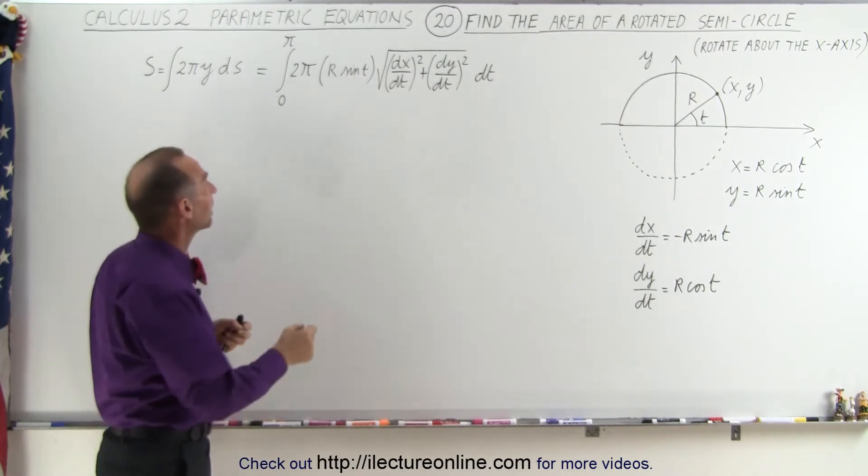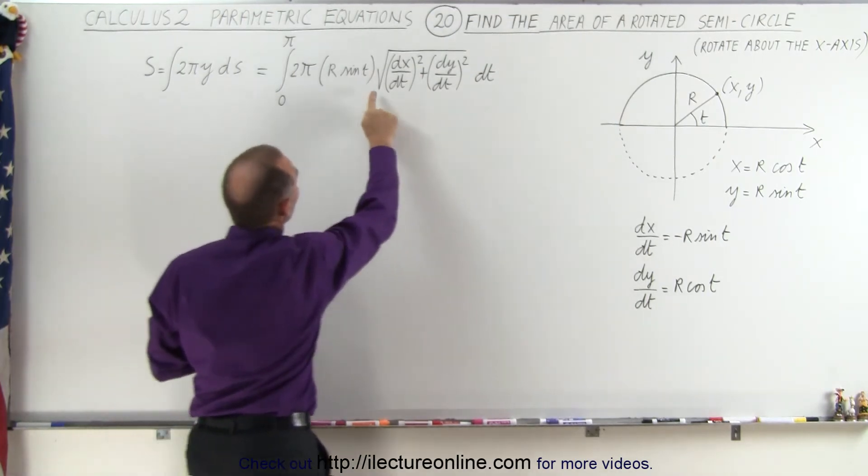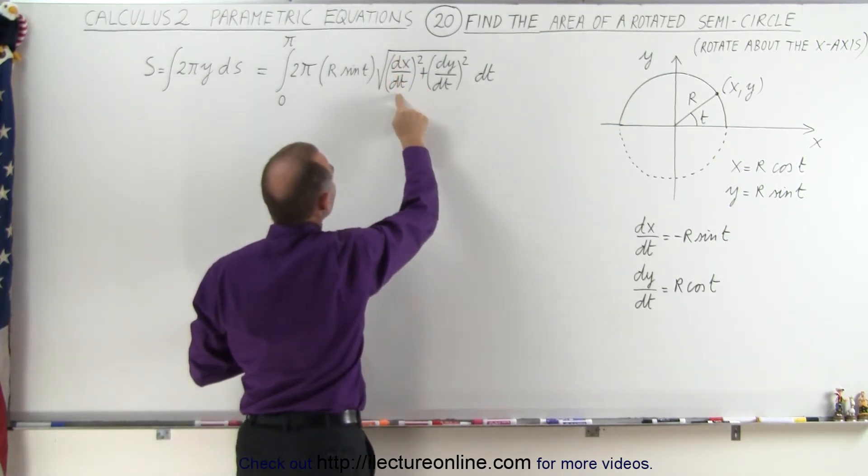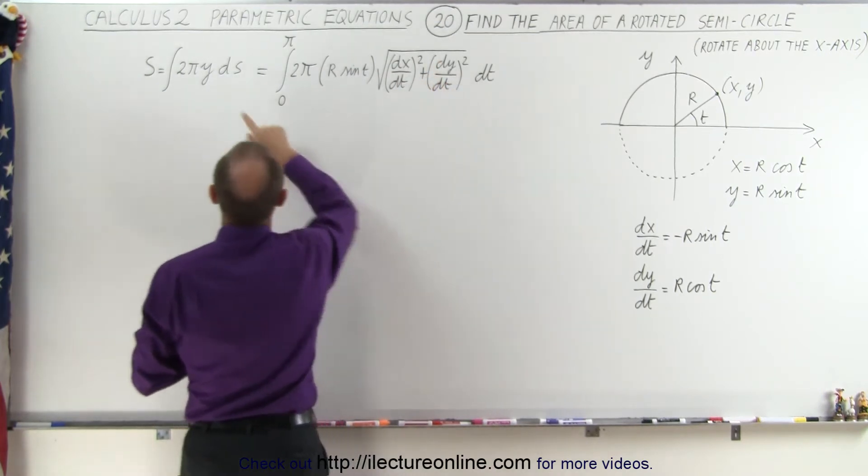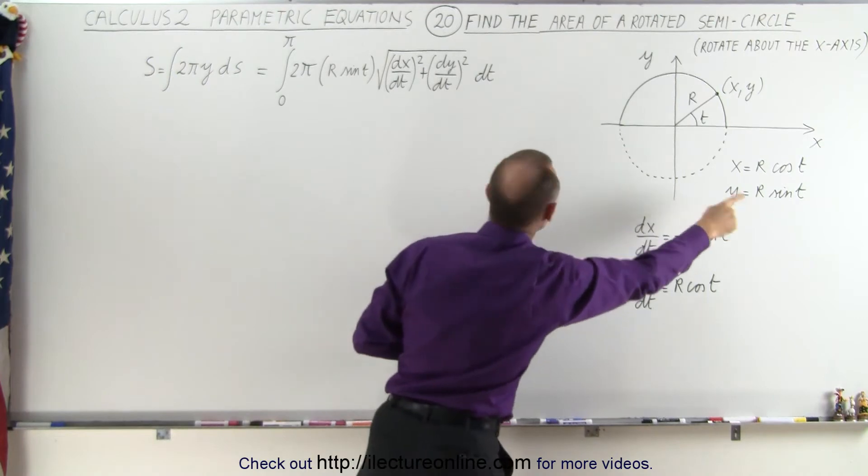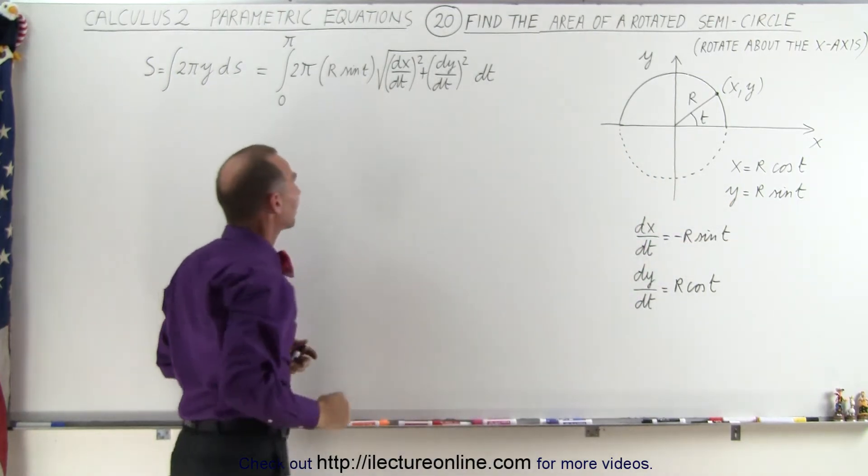And of course we can define the arc length ds by taking the square root of (dx/dt)² plus (dy/dt)². And y is defined as r sine theta so we replace y by r sine theta.